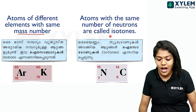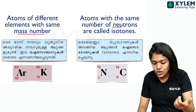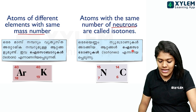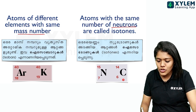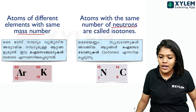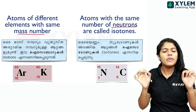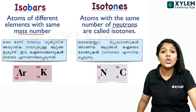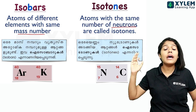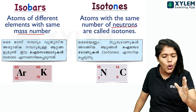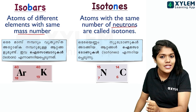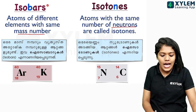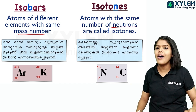Atoms with the same number of neutrons are called isotones. So isotones are atoms that have the same number of neutrons but may differ in atomic number and mass number. The mass number in isobars is the same — mass number equals the sum of protons and neutrons.